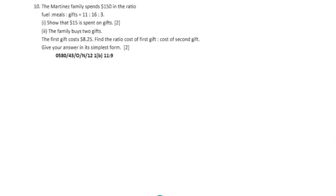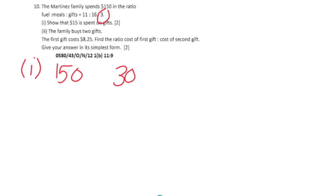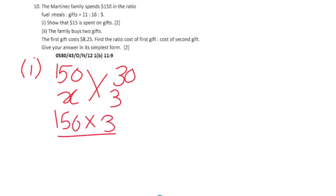Question 10: The Martini family spends $150 in the ratio fuel:meal:gift = 11:16:3. The total parts are 11 plus 16 plus 3, which is 30 parts. To show that $15 is spent on gifts: gifts are represented by 3 parts, so cross multiply 150 times 3 divided by 30, which gives $15.